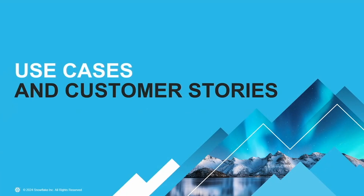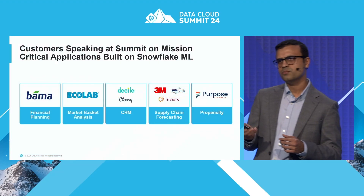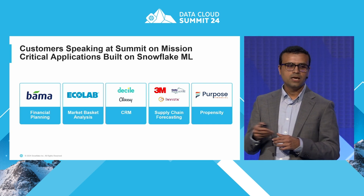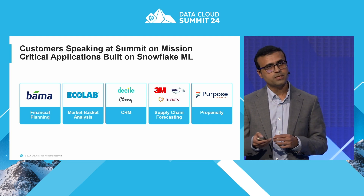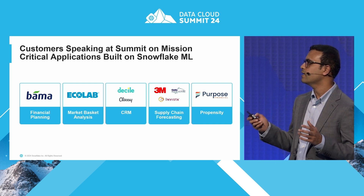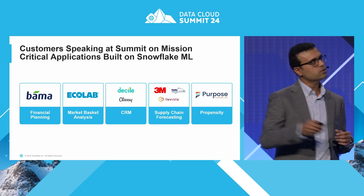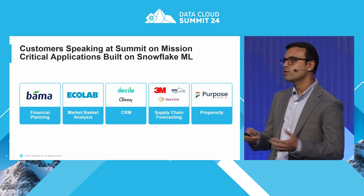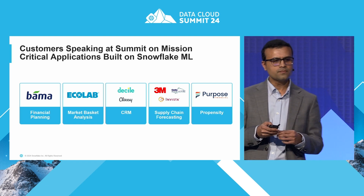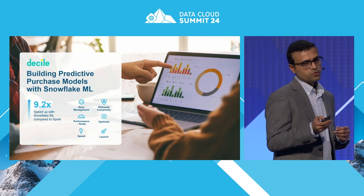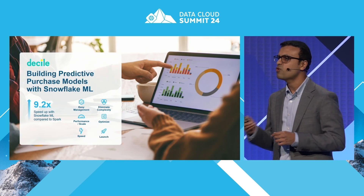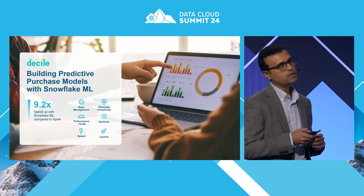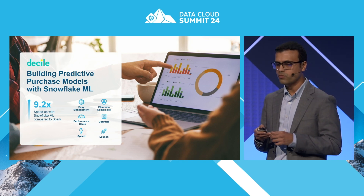A few use cases and customer stories. A lot of customers are building mission-critical applications using Snowflake ML already. These range from financial planning applications to predict accounts receivable and accounts payable burn rates, all the way to propensity models to predict whether a particular event is likely to happen — for example, would a customer subscribe to your service or not? Customers like Decile have migrated their ML workflows from Spark ML to Snowflake ML and have realized considerable gains in speed to execute these ML workflows.